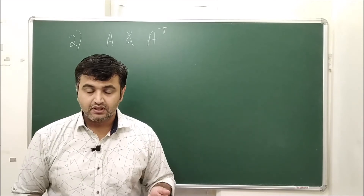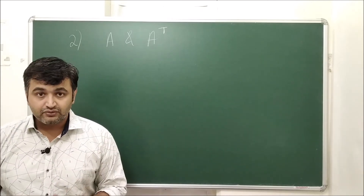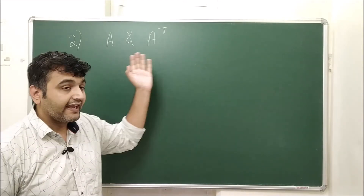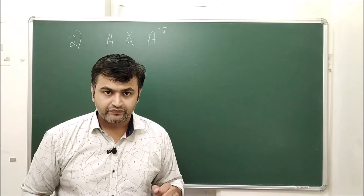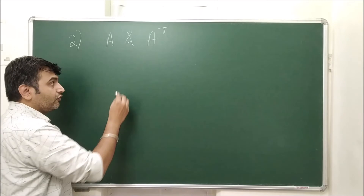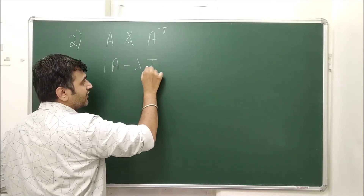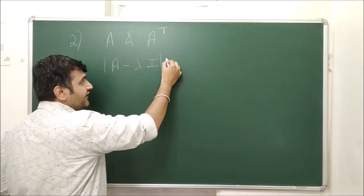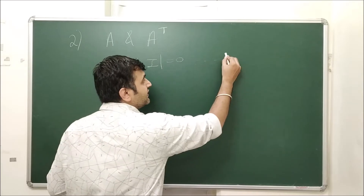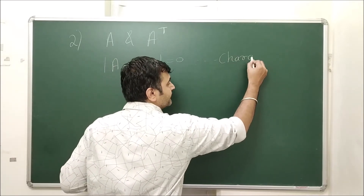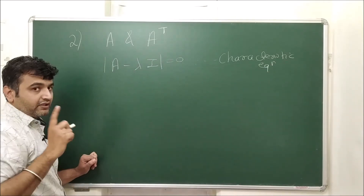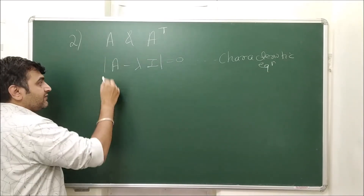The second property: if you take a matrix A and compute its transpose — interchanging rows and columns — the eigenvalues remain the same. The eigenvalues of A and A transpose are always equal. To prove this, recall that eigenvalues come from the characteristic equation det(A − λI) = 0, and we need to show A and A transpose share the same characteristic equation.